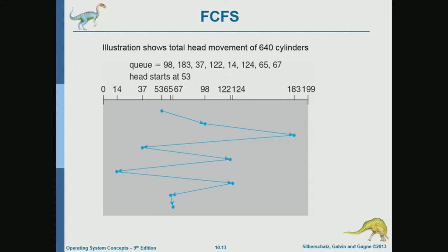It's obvious that this algorithm is not efficient. Assuming that you have a bunch of cylinder accesses that can be to arbitrary cylinder numbers, the head will potentially be moving back and forth, making lots of movements that can be avoided. In CPU scheduling, we found First Come First Serve very inefficient. To minimize waiting time, what algorithm did we consider? Shortest Job First.